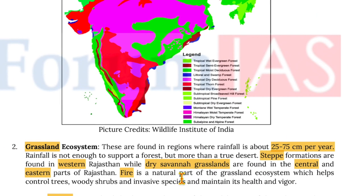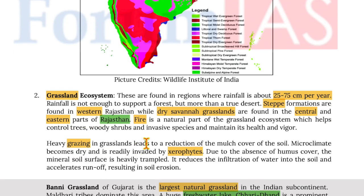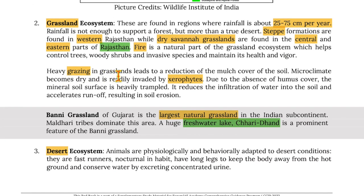Moving on to grassland ecosystems, these are found in regions where rainfall is about 25 to 75 cm per year — not enough to support a forest but more than a true desert. Steppe formations are found in western Rajasthan while dry savannah grasslands are found in central and eastern Rajasthan. Fire is a natural part of the grassland ecosystem which helps control trees, woody shrubs and invasive species. Heavy grazing leads to reduction of mulch cover, making the microclimate dry and readily invaded by xerophytes.